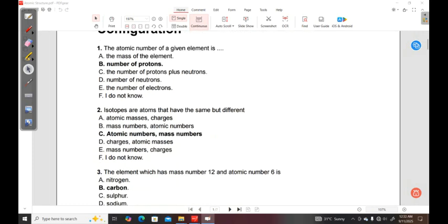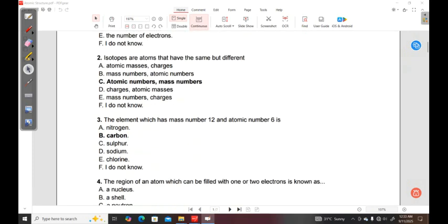Number two: Isotopes are atoms that have the same ___ but different ___. A, atomic masses and charges; B, mass numbers, atomic numbers; C, atomic numbers, different mass numbers; D, charges, atomic masses; E, mass numbers and charges.